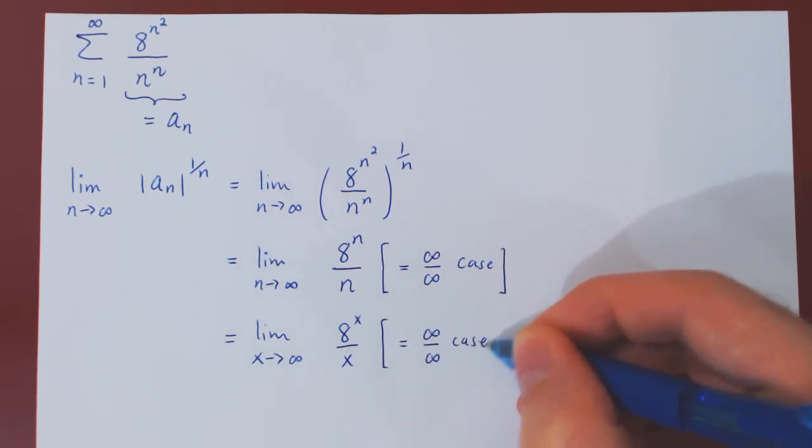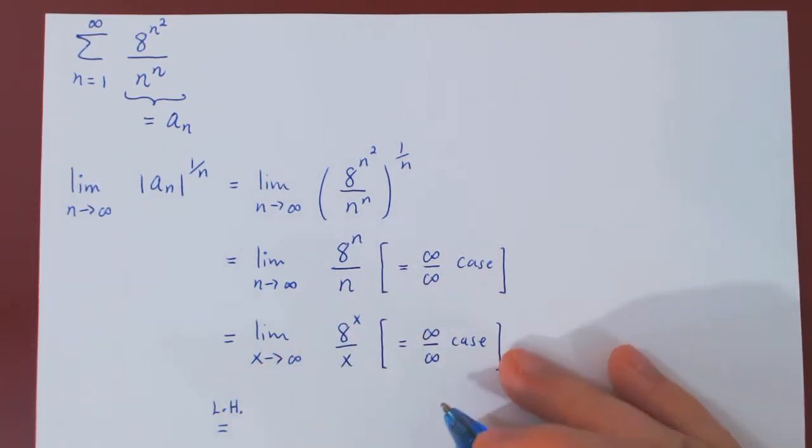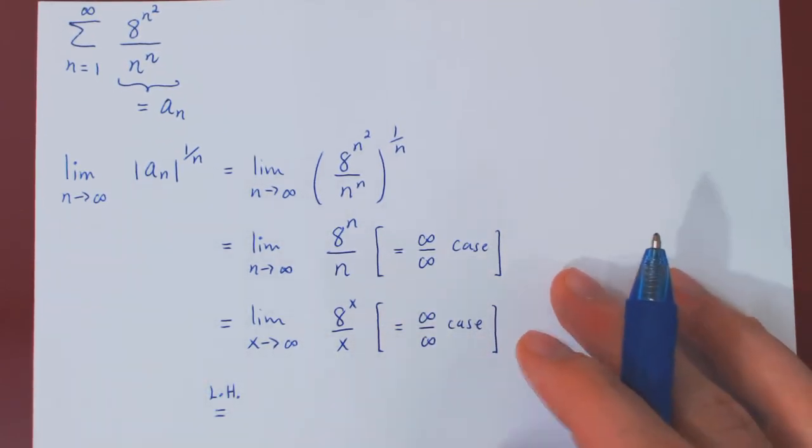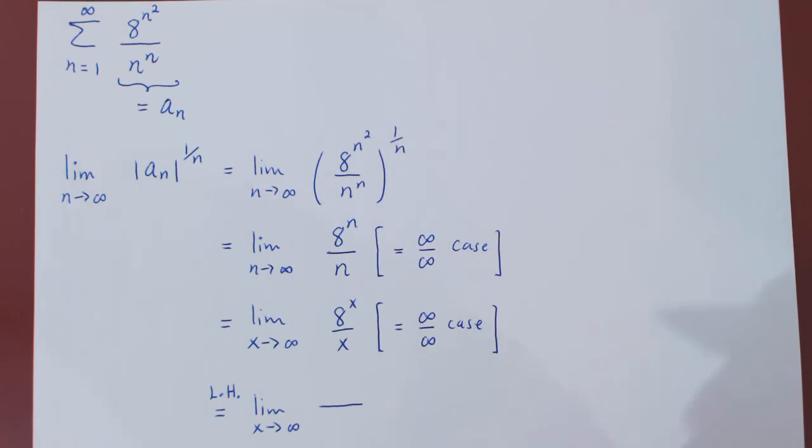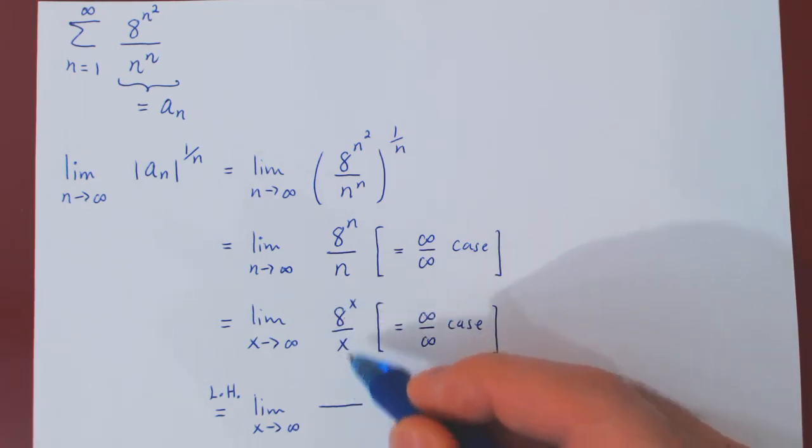So, above the equality, I'll write L'H to be explicit that I am applying L'Hopital's rule. We are still letting x tend to positive infinity. And if you recall, L'Hopital's rule says to replace the numerator by its derivative, the denominator by its derivative.